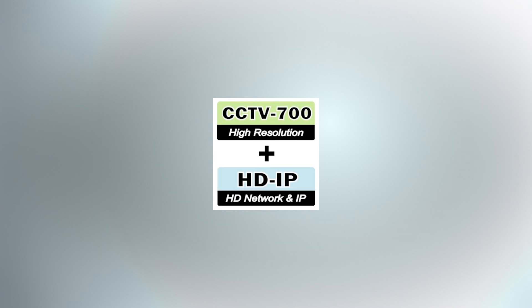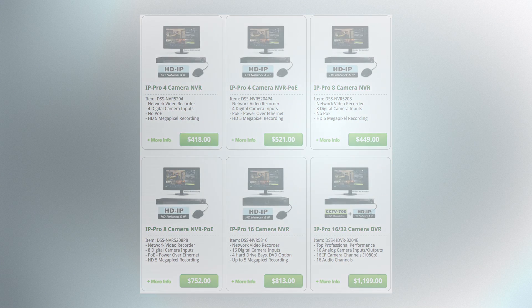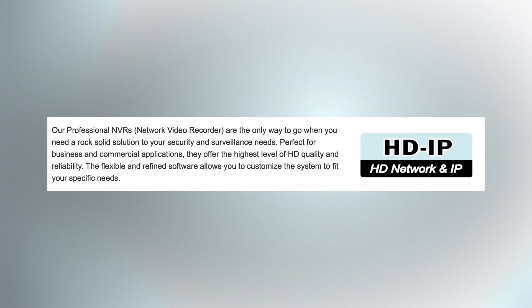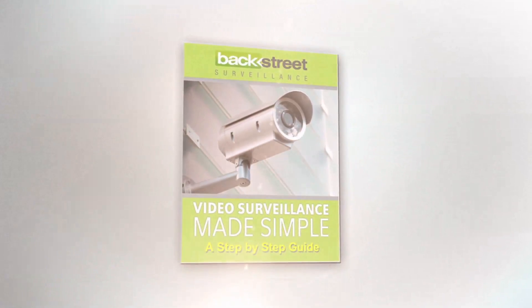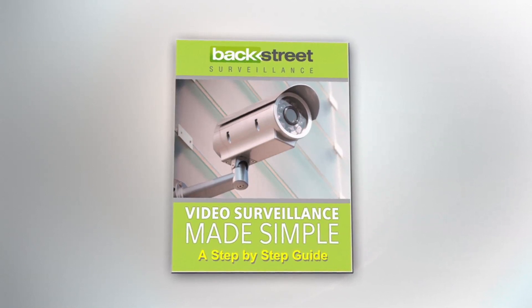The benefits of a hybrid system cannot be understated — the customer enjoys the benefits of both technologies. Backstreet's line of professional NVRs are a perfect example. They allow you to combine analog surveillance cameras with IP cameras into one seamless and effective surveillance system. This allows you to use low-cost CCTV 700 security cameras where needed and network IP cameras for remote locations, combining the management of all cameras into one powerful and comprehensive surveillance system.